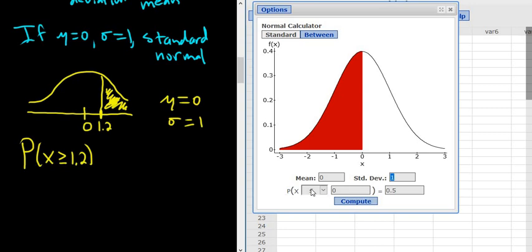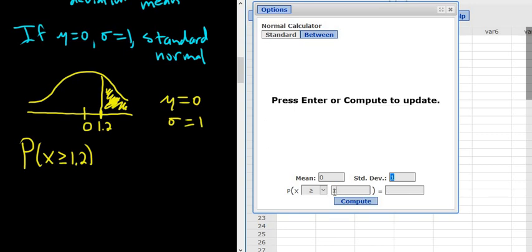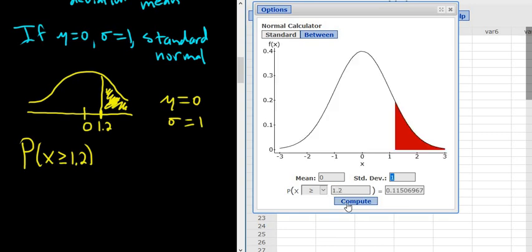So we have the P. You just change this to greater than or equal to. Type in the 1.2 here. And boom. There it is. 0.1151 if we use four decimals. 0.1151.